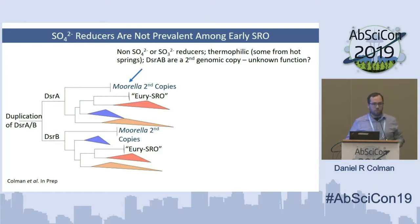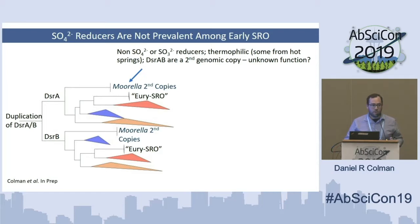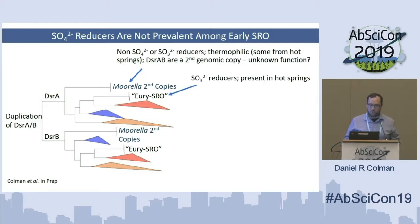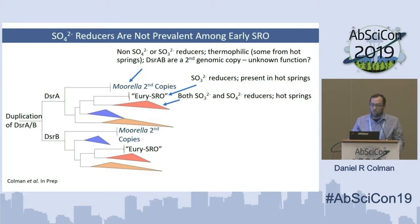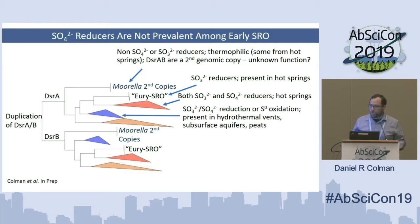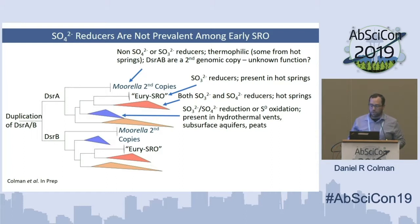Taking a closer look at these organisms to infer something about their ecology: these deeply branching DSR homologs from Moorella are from organisms that don't actually reduce sulfate or sulfite, nevertheless they're thermophilic and many have been isolated from hot springs. These DSR represent a second genomic copy and it's unclear what the function of these enzymes is, given that these organisms can't reduce sulfate or sulfite. The URI SRO we believe to be sulfite reducers present in hot springs. Likewise, for this group of largely Crenarchaeota archaea, it includes both sulfite and sulfate reducers from hot springs. This other early-branching group includes both sulfite and sulfate reducers — or possibly, since these are uncultured organisms, potentially sulfur oxidation as well — and these are found in hydrothermal vents, subsurface aquifers, and peats.